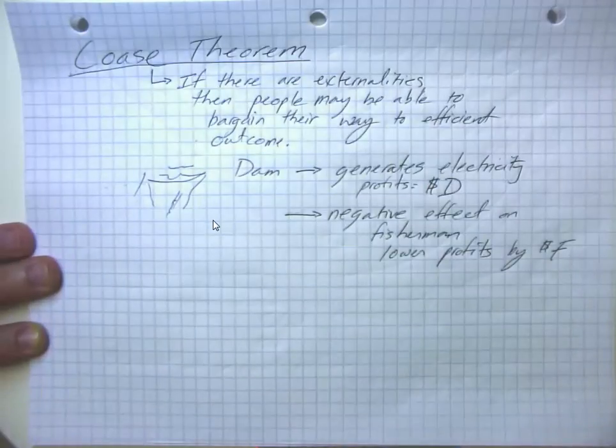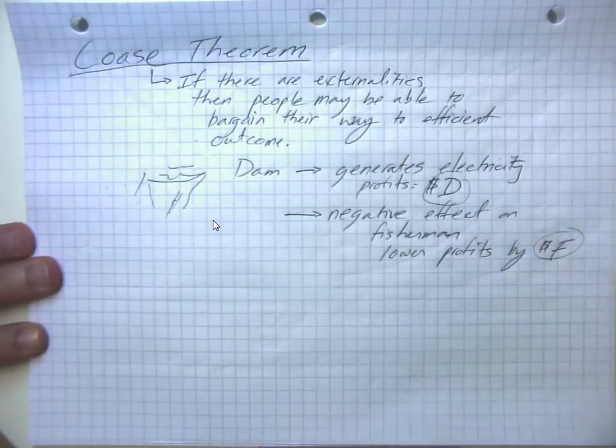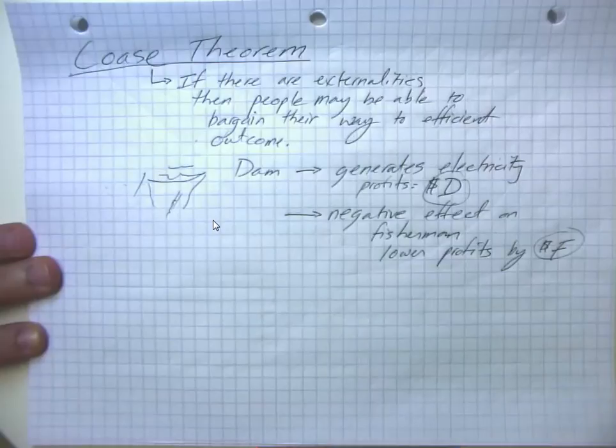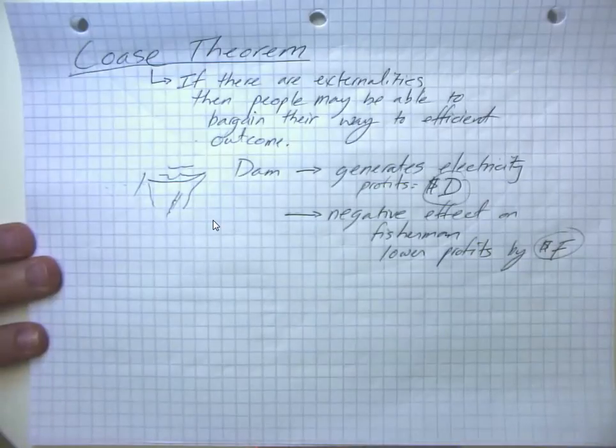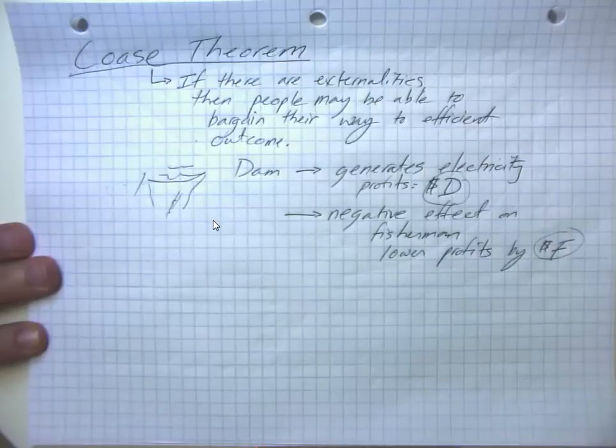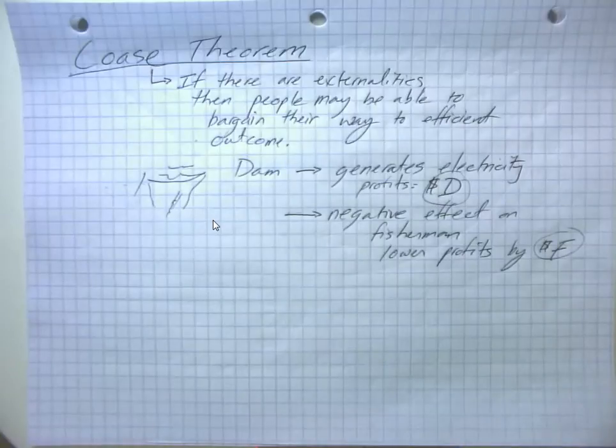So some questions here. How does the relative size of F versus D impact the efficiency of keeping the dam versus destroying it? How do people's property rights about either keeping their dam or having a property right to have this fishery be free impact the efficiency of the eventual outcome? And how does the distribution of those property rights affect the distribution of economic welfare?